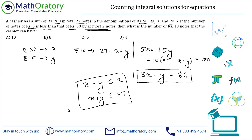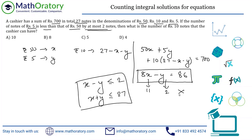Looking for a multiple of 8 just above 86: that's 88, giving X = 11 and Y = 2. But 11 − 2 = 9, which violates X − Y ≤ 2, so this is not allowed. Moving to the next solution: increase X by 1 and Y by 8, giving X = 12 and Y = 10. Now 12 − 10 = 2, which satisfies the constraint.